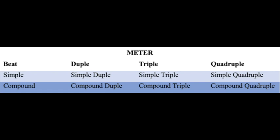Compound is where it gets a little bit tricky, because instead of one and, two and, we're going one and a, two and a, three and a. So compound duple has six small beats grouped into two: one and a, two and a, one and a, two and a. Compound triple: one and a, two and a, three and a, one and a, two and a, three and a. Compound quadruple: one and a, two and a, three and a, four and a.